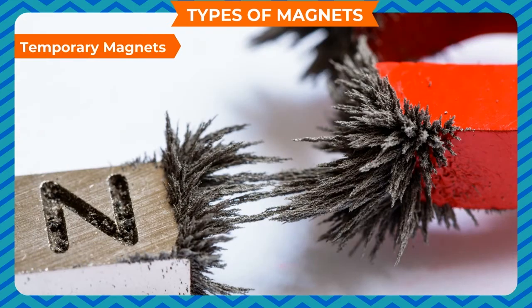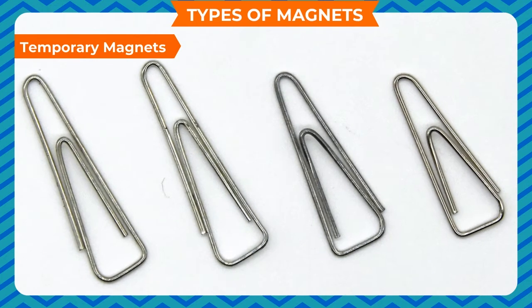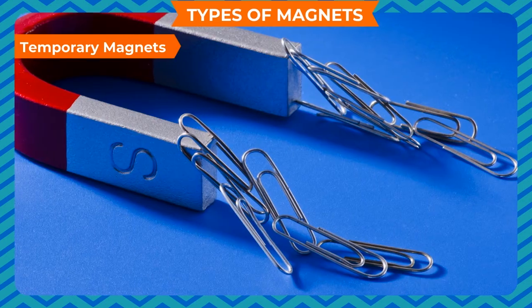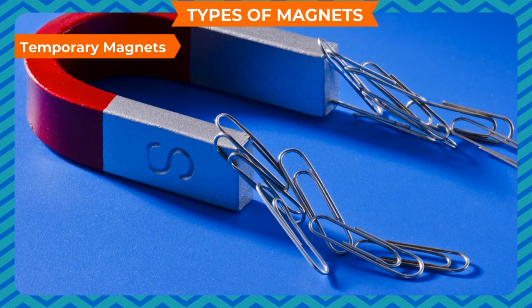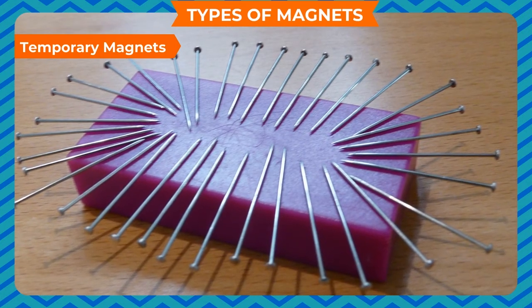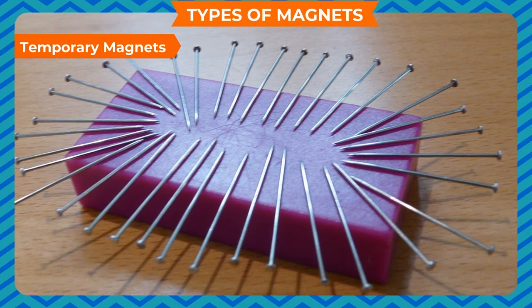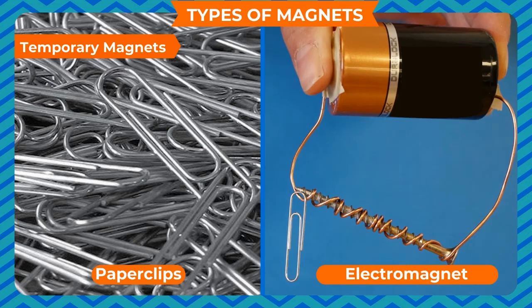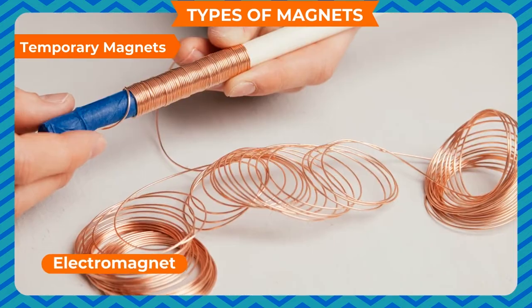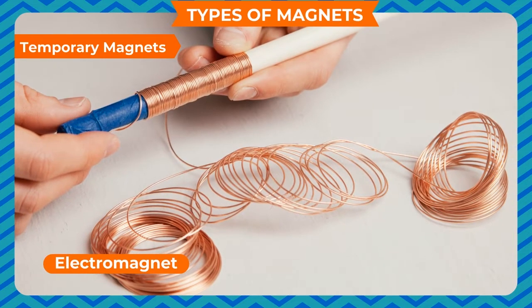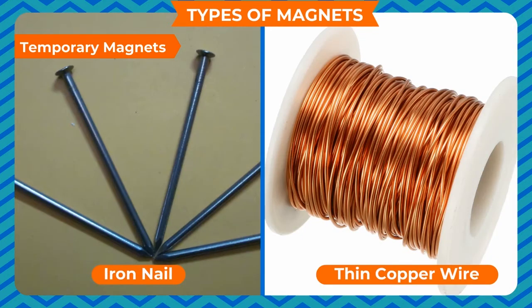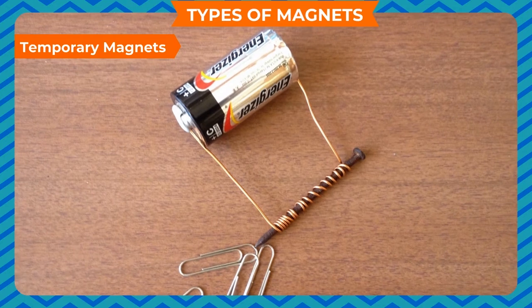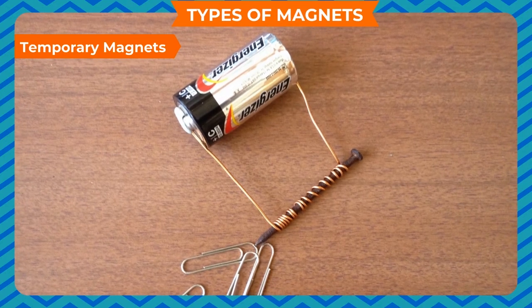Temporary magnets are those magnets which show their magnetic behavior when placed in the magnetic field of permanent magnets. They lose their magnetic behavior when the magnetic field is removed. Some examples of temporary magnets are paper clips and electromagnets. An electromagnet is an artificial magnet made up of an iron nail and thin copper wire. It shows its magnetic behavior only while electric current flows through it.